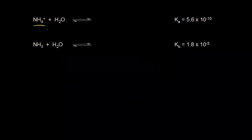We've already seen that NH4+ and NH3 are a conjugate acid-base pair. Let's look at NH4+. The ammonium ion would function as an acid and donate a proton to water to form H3O+. If NH4+ donates a proton, you're left with NH3.